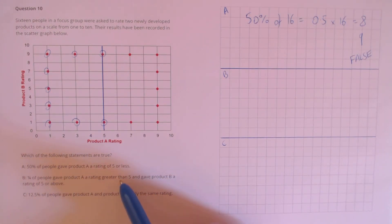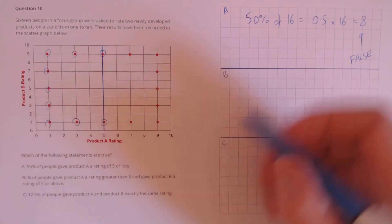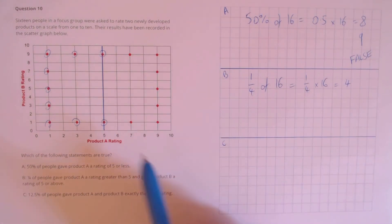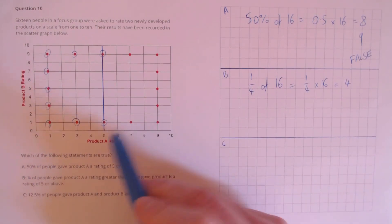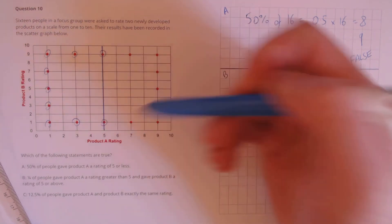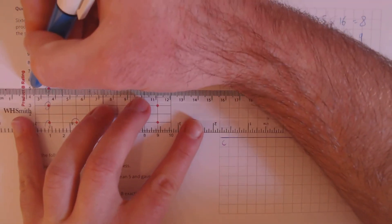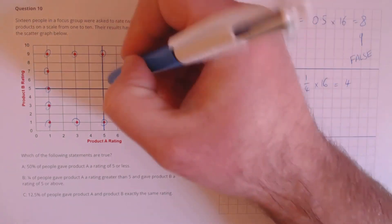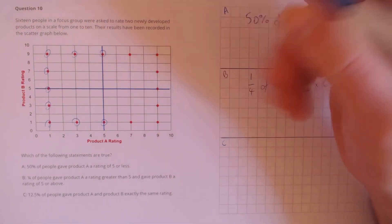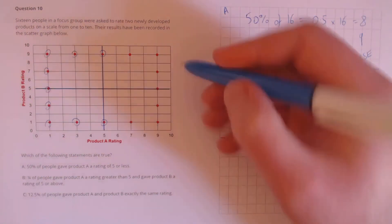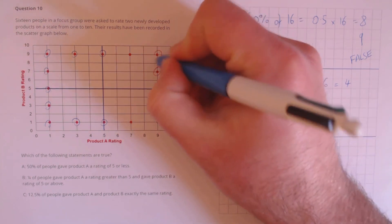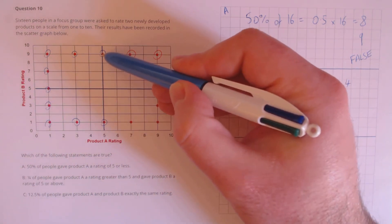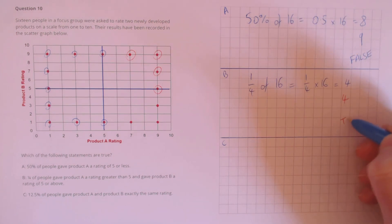Statement B: a quarter of people gave product A a rating greater than 5 and product B a rating of 5 or above. A quarter of 16 is 4. Those to the right of the product-A line at 5 (not including the line) and at or above 5 for product B fall in this region. Counting: 1, 2, 3, 4 — the fifth point is not counted because we need greater than 5 for product B. So we have 4, as expected — that's true.